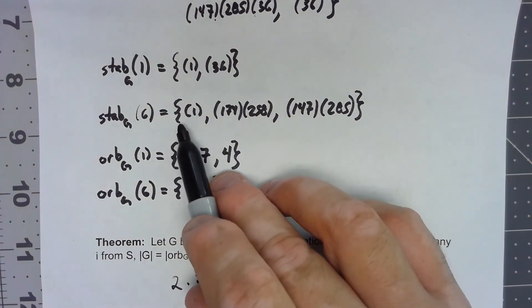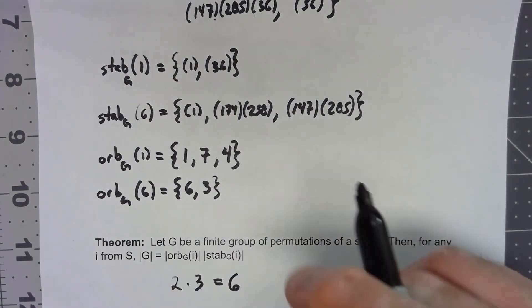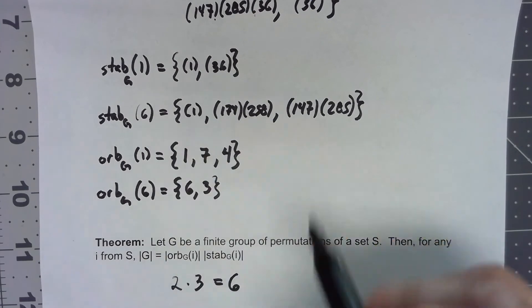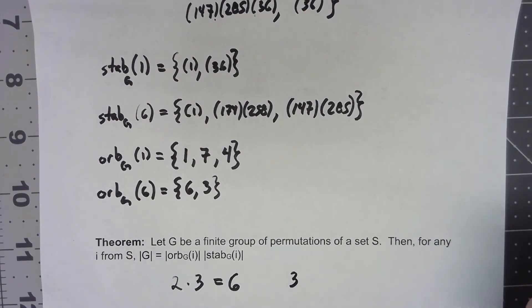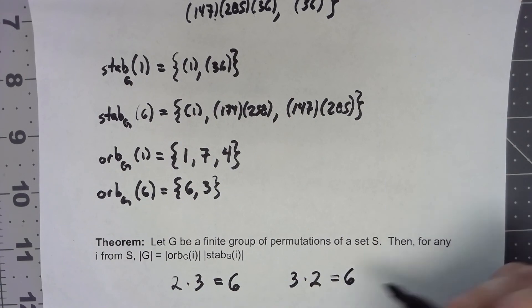If I do the same thing for six, it's still going to be two times three, but in the other order. The stabilizer of six, there were three things that kept six fixed. There were two different places that six mapped to. Three times two, again, gives us the order of the group, which is six.